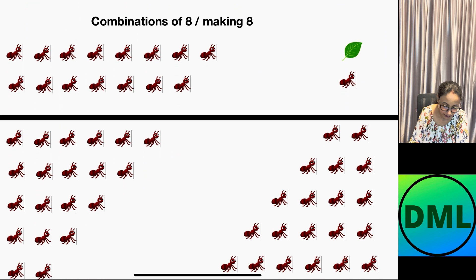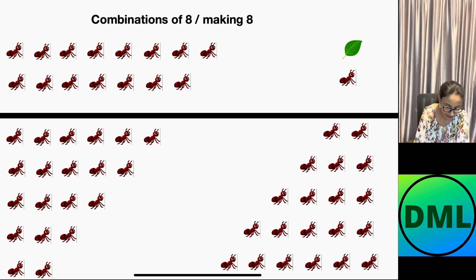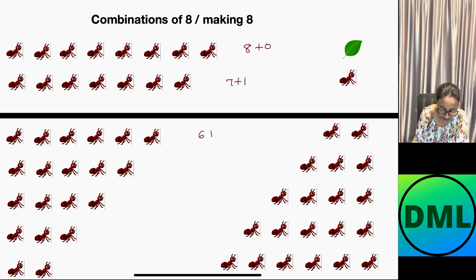Let's see the combinations of 8. Here we have 1, 2, 3, 4, 5, 6, 7, 8 ants and there is no ant on the right-hand side. This will be written as 8 plus 0. The next combination will be 7 plus 1.